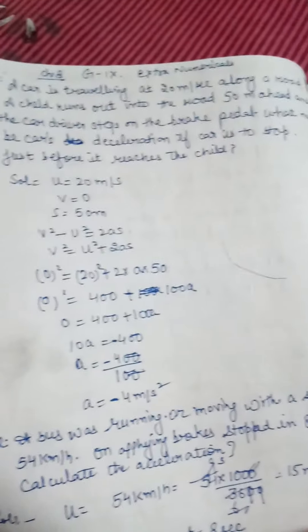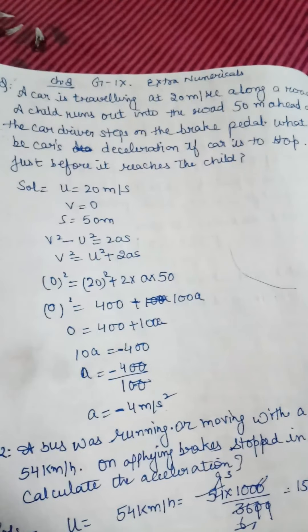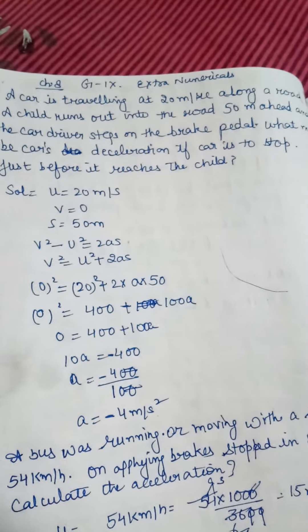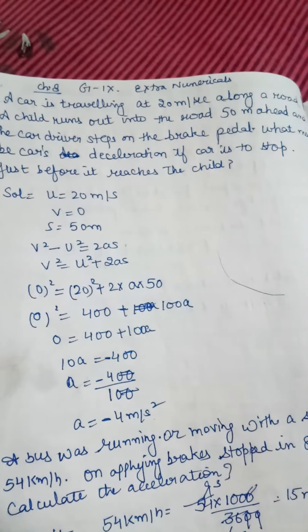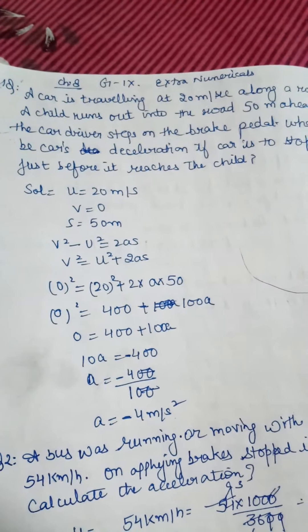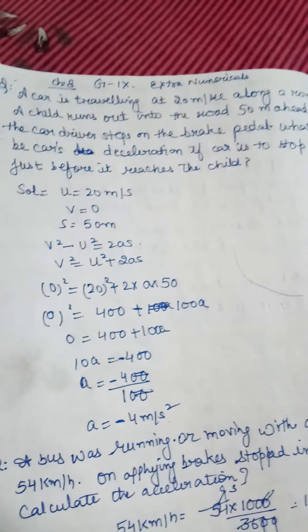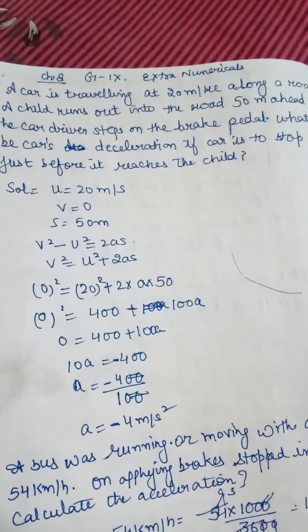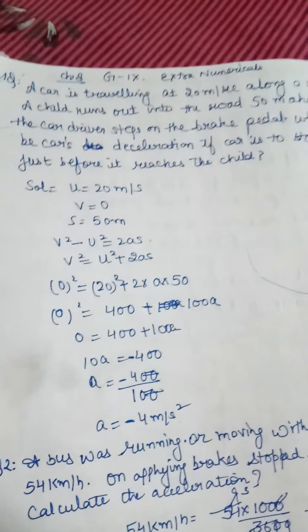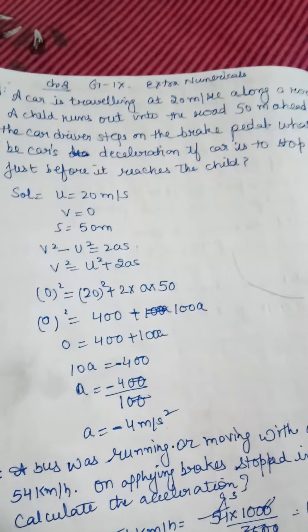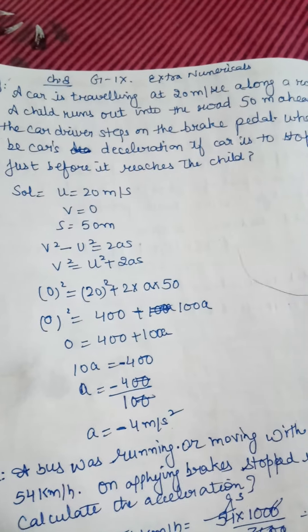Today we talked about numericals regarding Grade 9. Our first question was: a car is traveling at 20 meters per second along a road, and a child runs out and covers 50 meters ahead, and the car stops as the brakes were applied at the front of the child.